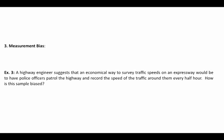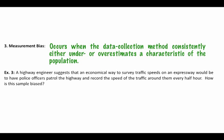Measurement bias occurs when the data collection method consistently either underestimates or overestimates the characteristics of a population. A good analogy is a tailor's cloth measuring tape that has been used for ten years. Over time the cloth stretches out little by little, so every time that tailor measures an inseam, it's going to be a little bit longer than it really is. If you take all that data to find the average inseam length, systematically it's going to be skewed just because of the simple tool being used to measure.